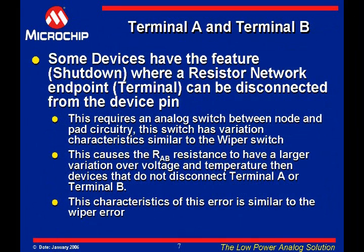Some devices, such as the MCP41-XXX and MCP42-XXX, offer a shutdown feature that will disconnect certain terminal pins from the internal resistor network. To disconnect terminal A or terminal B, an analog switch must be placed between the resistor network and the device pad. This analog switch has similar characteristic issues as the analog switch used in the wiper, so the variation of the switch on terminal A and/or terminal B adds to the variation of the total RAB resistance. This variation has voltage and temperature implications.